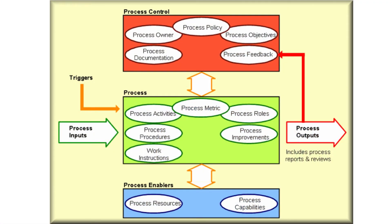There's one thing I haven't talked about yet, and that is the trigger. All processes have to respond to a trigger — in other words, what starts the process off? Incident management doesn't just happen automatically. Something has to start it. It could be automated, it could come from event management, or it could be a phone call or email from a user, or a user logging their own incident on your core login system. Whichever one of those it is, these are triggers to the incident management process. All processes have to have a trigger.